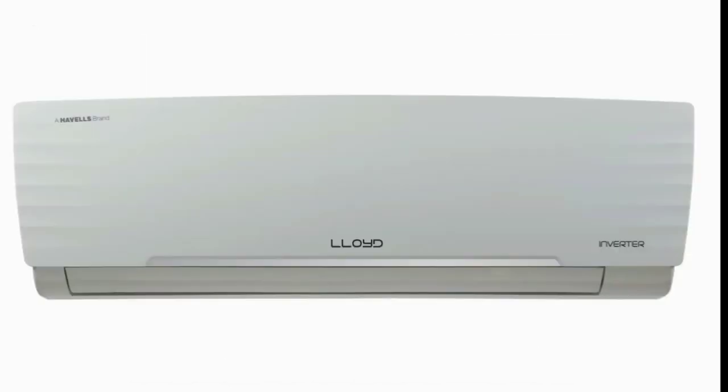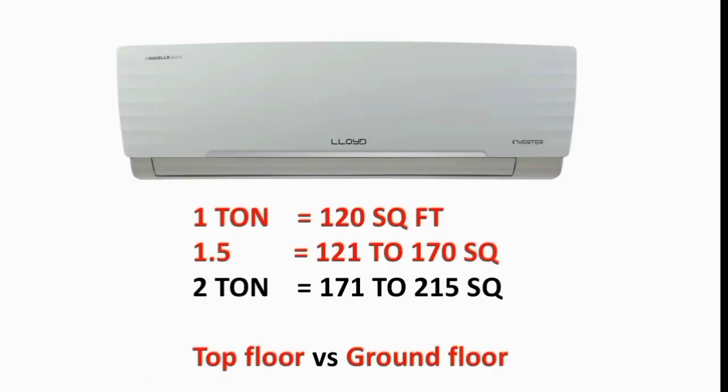First, let's look at the AC capacity factor — how much AC is suitable for your room. If you choose based on room size: a 1-ton AC is for up to 120 square feet, a 1.5-ton AC is for 120 to 150 square feet, and a 2-ton AC is for larger room sizes. This is the first factor.